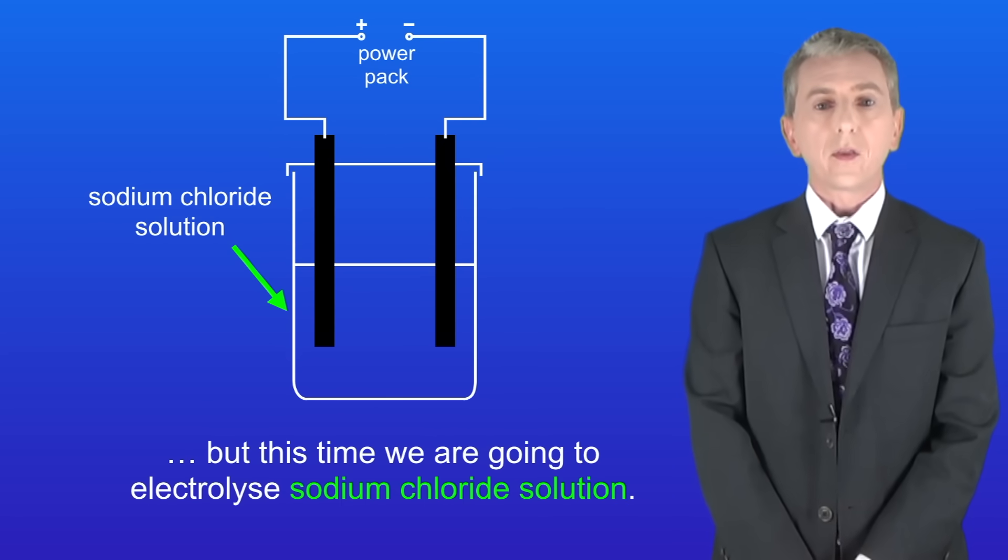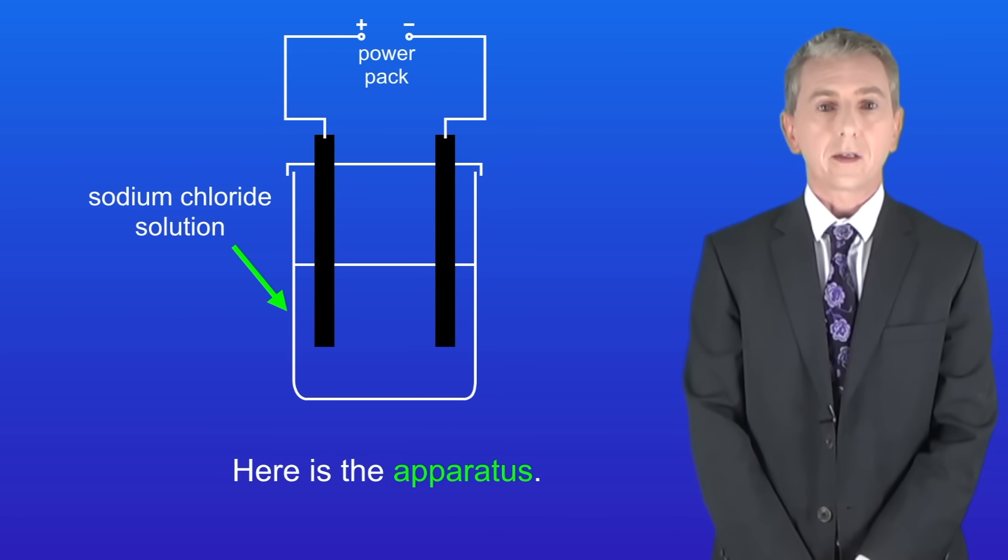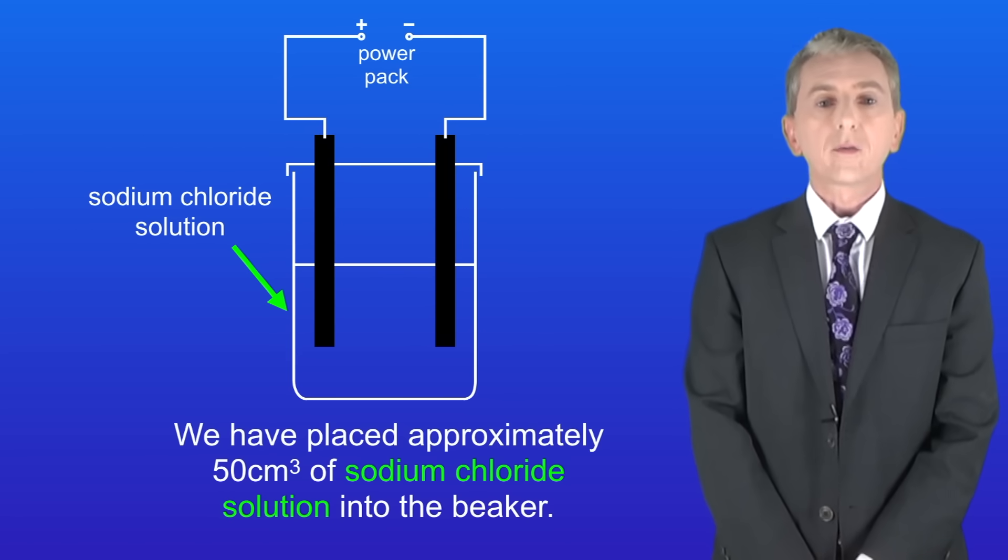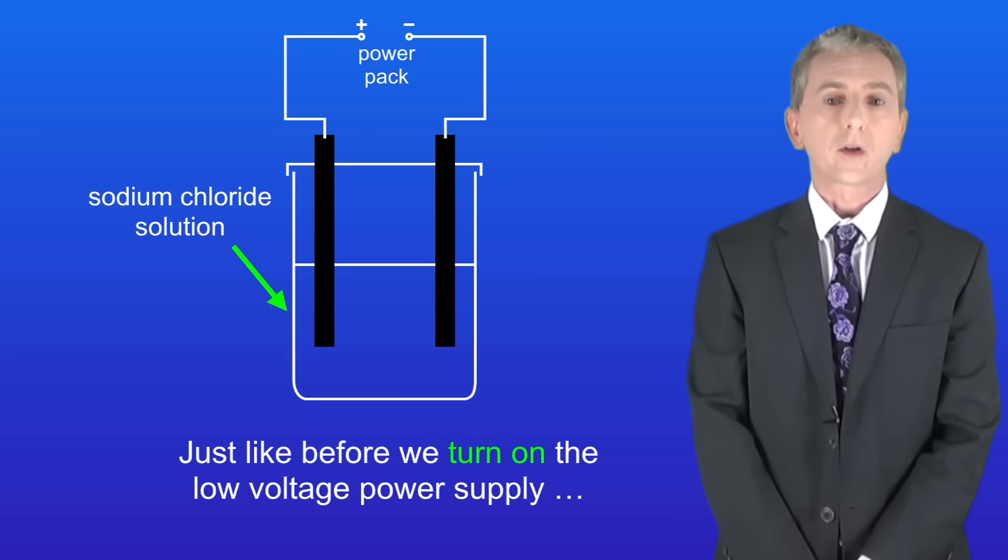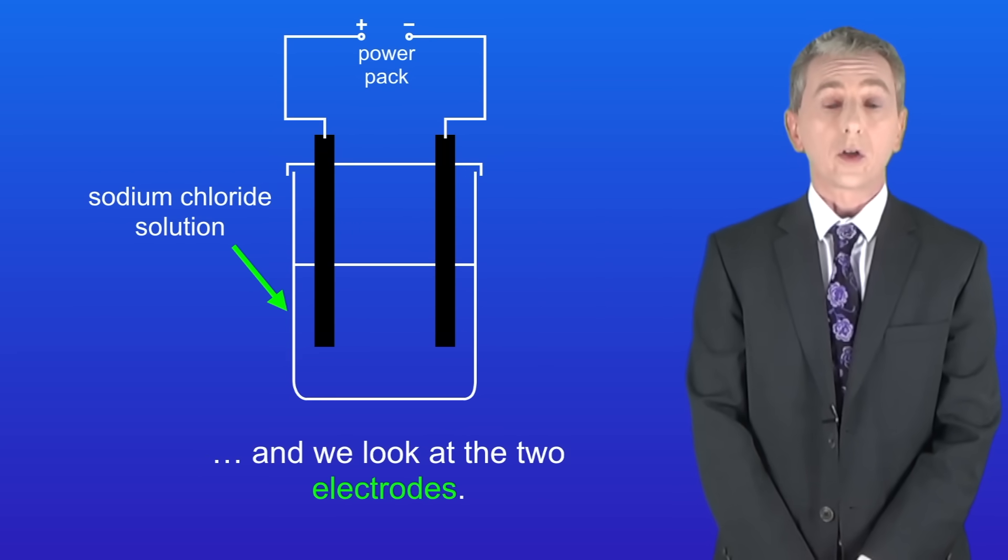Now we're going to repeat the experiment but this time we're going to electrolyze sodium chloride solution. We've placed approximately 50 centimeters cubed of sodium chloride solution into the beaker. Just like before we turn on the low voltage power supply and we look at the two electrodes.